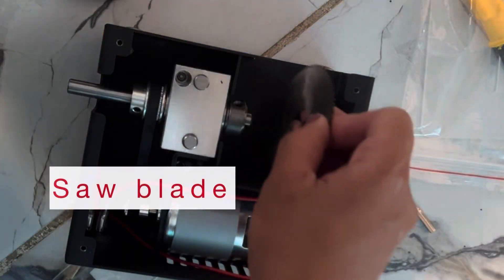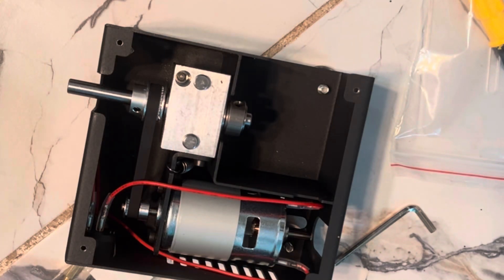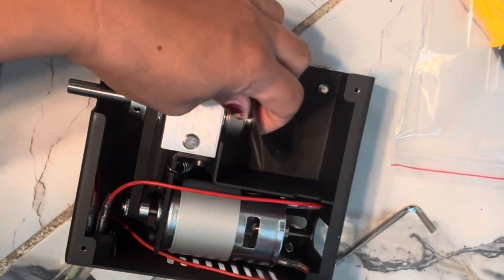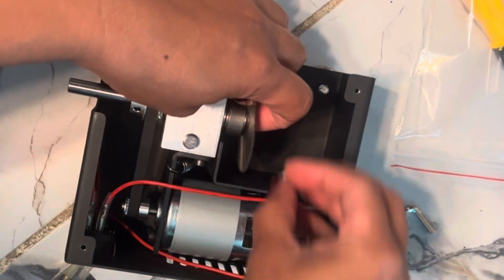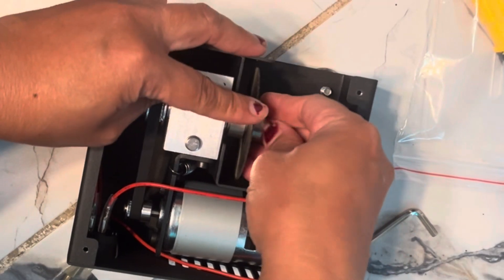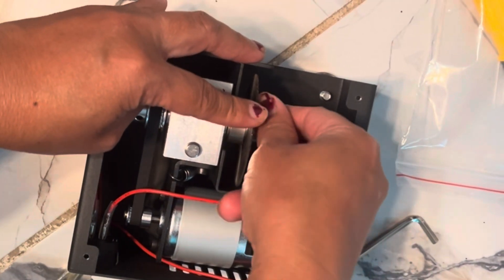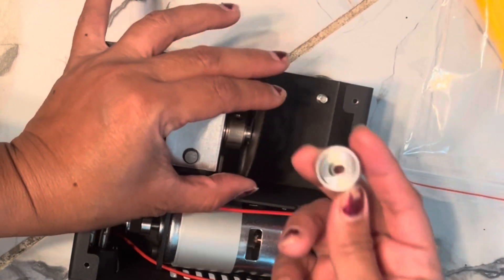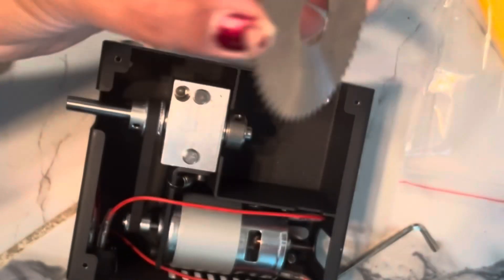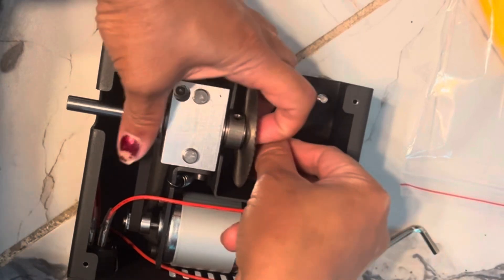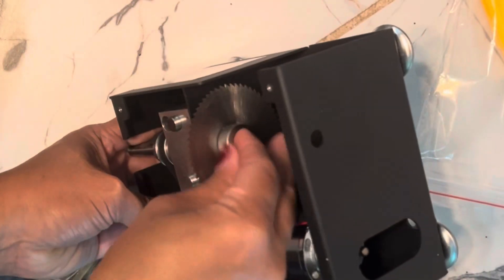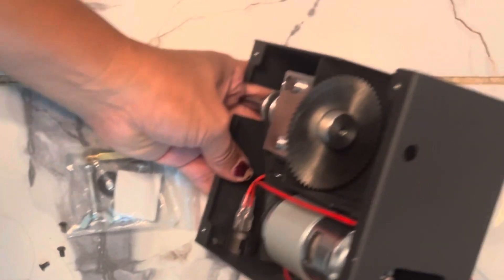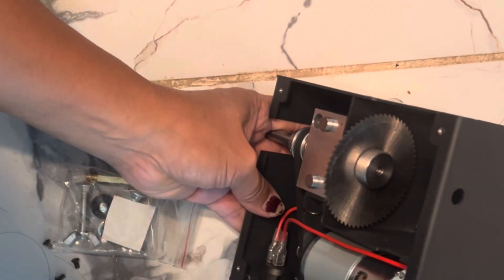Once that's done, find the blade that you want to use. Right now I'm just choosing this blade for this installation. Make sure that you look at the direction of the blade as well. I made sure that the face of the blade with the writing on it, the label, is facing outwards.